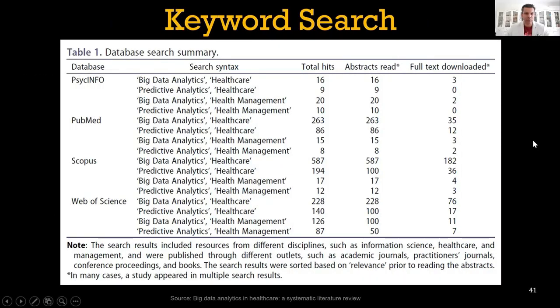In the methodology section, if you want to put a table, this is an example. Here keywords were searched, how many results you got from those keywords, how many abstracts were read, did you download the full text to make a judgment whether the paper should be included or excluded.